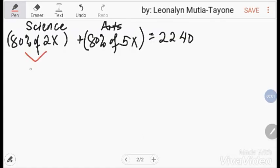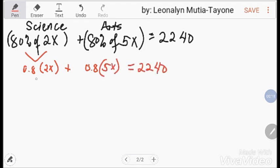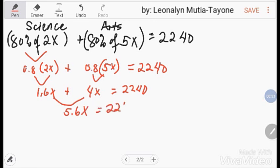So, ito na yung equation natin. 80% of 2x, this is 0.8 times 2x, plus 80% of 5x, this is 0.8 times 5x, equals 2,240. Multiply mo yan: 1.6x plus 4x equals 2,240. And then, i-add mo yan. That is 5.6x equals 2,240.